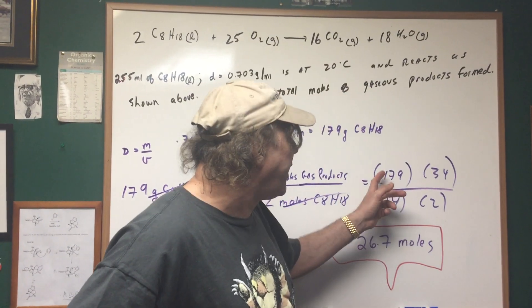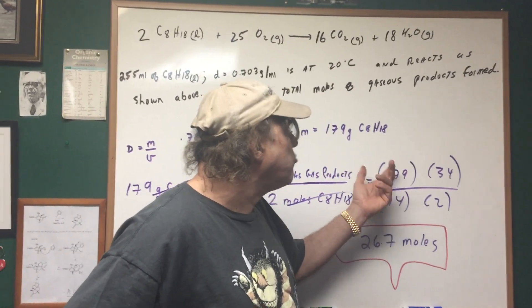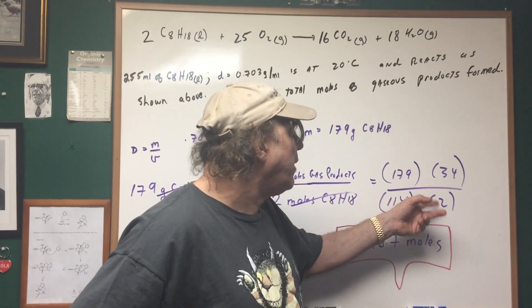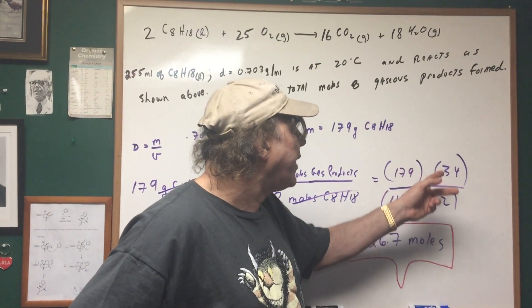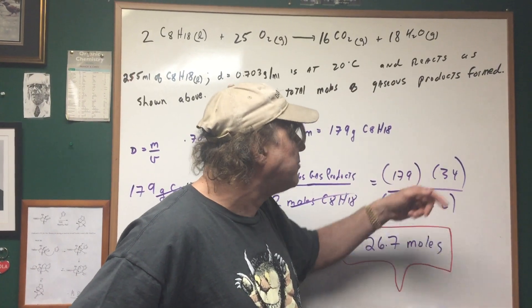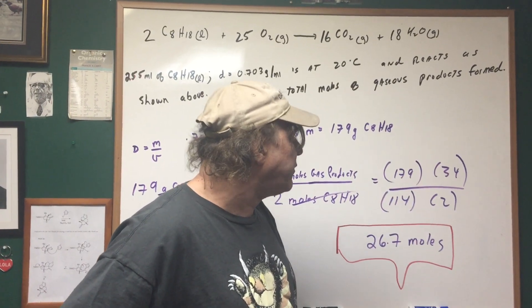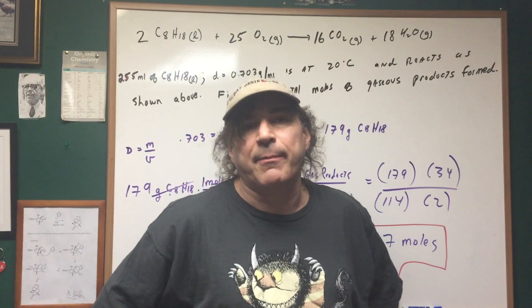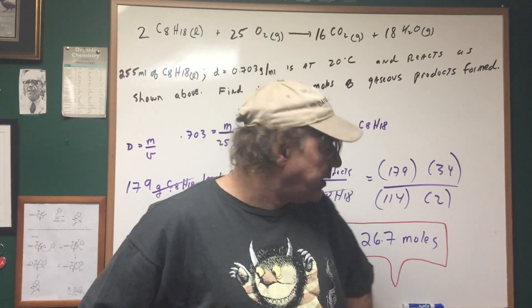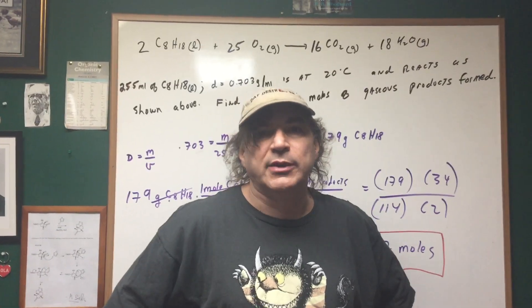A suggestion would be: 179 is around 180, 180 divided by 2 is 90. So if you multiply 90 by 2, you got 90 times 34 over 114. Try to see if you can see a little gimmick or a trick to work it out to get approximately 25 to 26 moles.